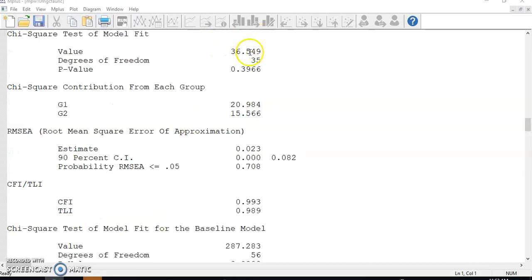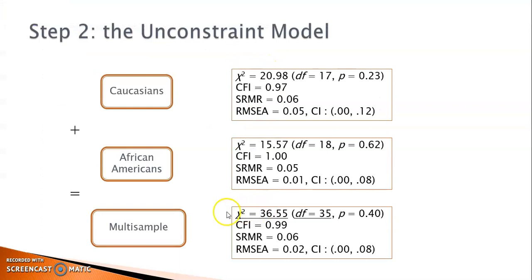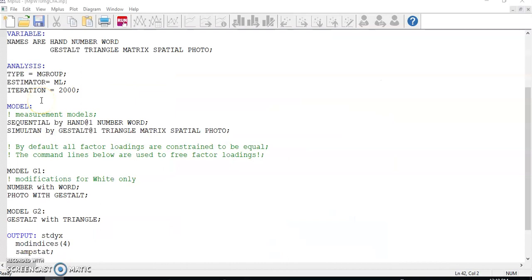You can see in the output file the model fit indices are pretty good, and the overall model chi-square is the sum of the chi-squares of the two individual groups. Once you have the unconstrained model, it is not hard to make it into a constrained model. All you need to do is to remove the repeated model structure from Model G1 and Model G2. Repeating the model structure means that you want Mplus to estimate the parameter values independently for each group. That is why we do it in the unconstrained models. Without repeating the model structure, we are staying with the default of Mplus, setting equality constraint on corresponding factor loadings across groups, which is needed for the constrained model.